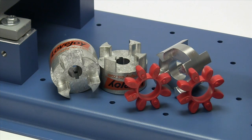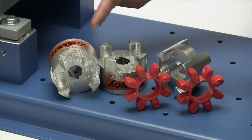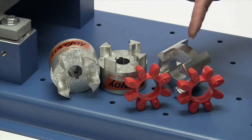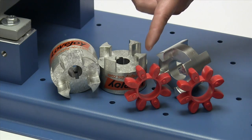The following components are provided with the purchase of your Lovejoy curved jaw spacer style coupling. You should have two curved jaw style hubs, a curved jaw spacer, and two spiders.